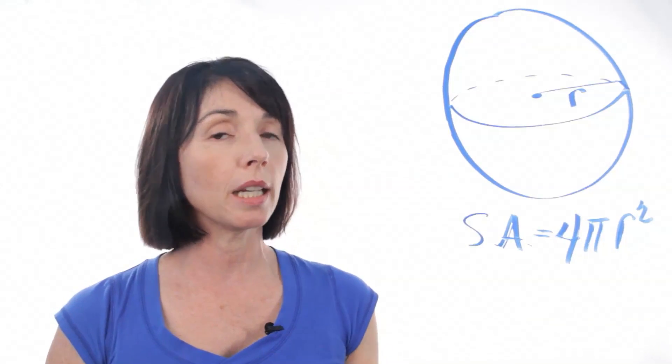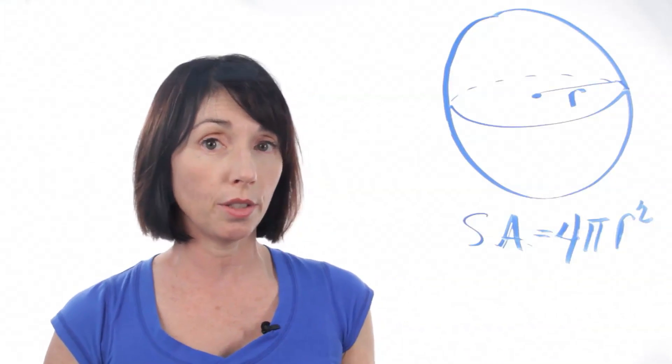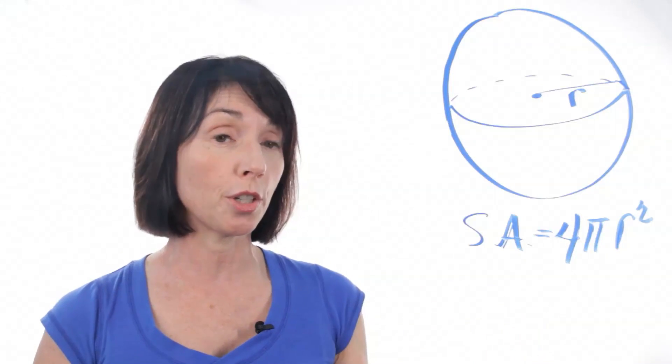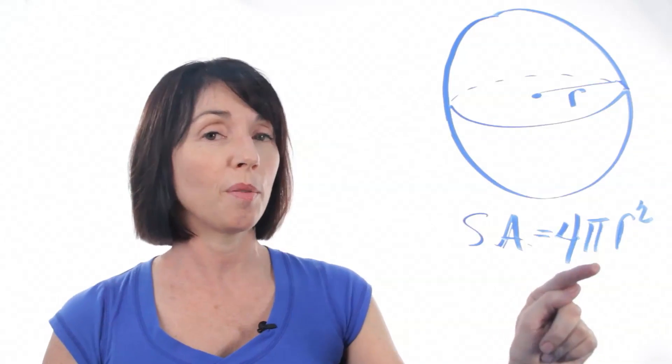It's pretty easy to remember because the area of a circle, just a plain two-dimensional circle, is πr². So to find the surface area of a three-dimensional sphere, you just take 4πr².